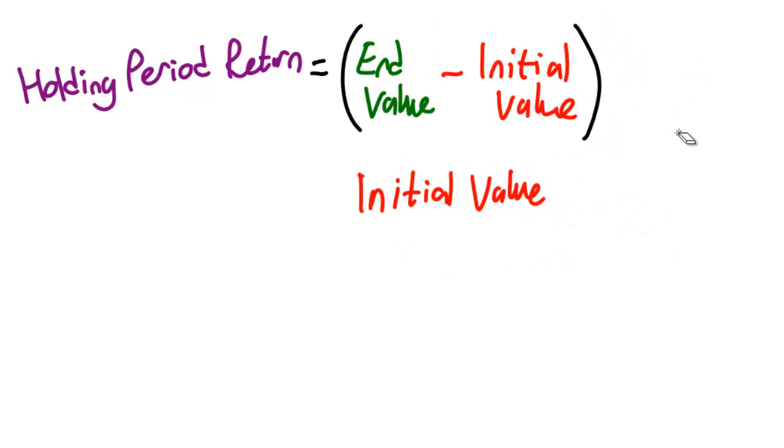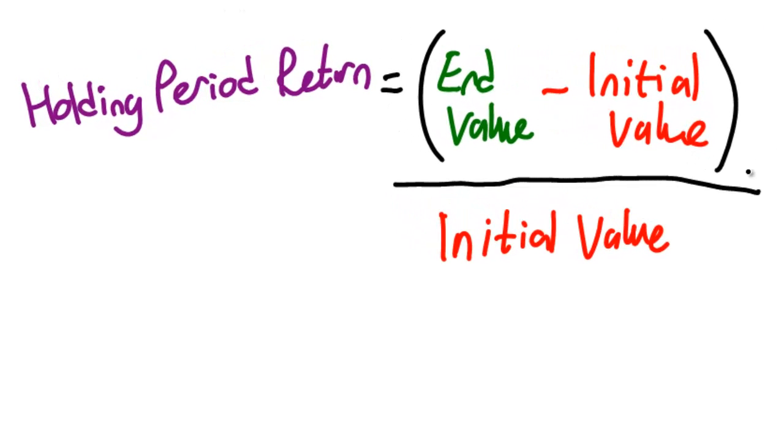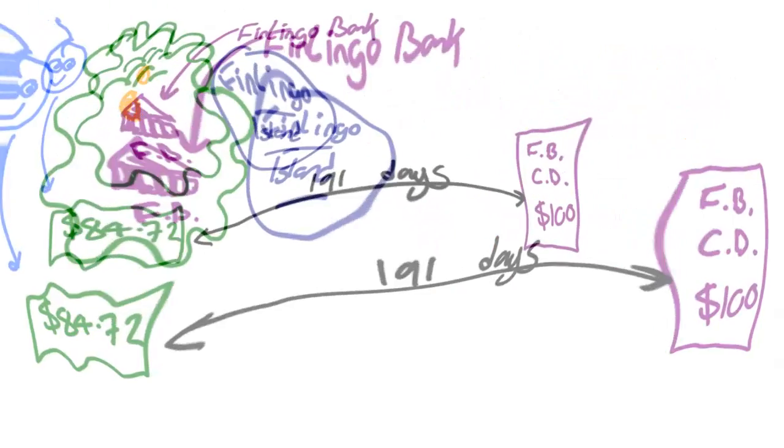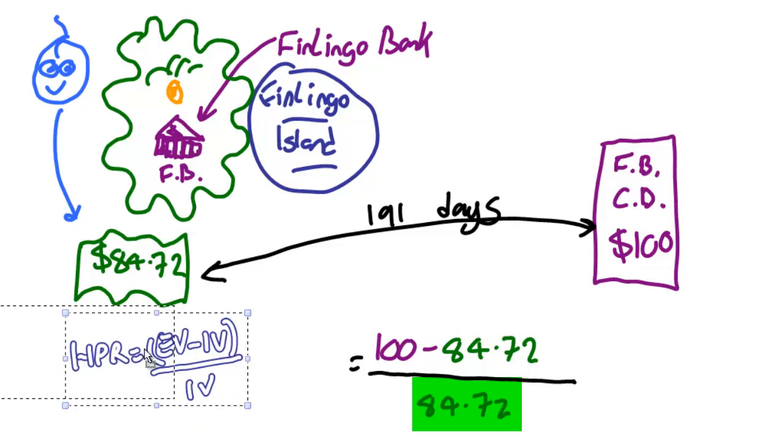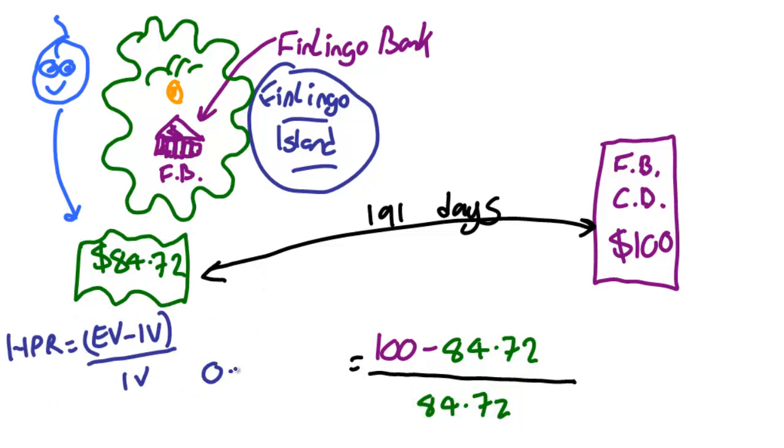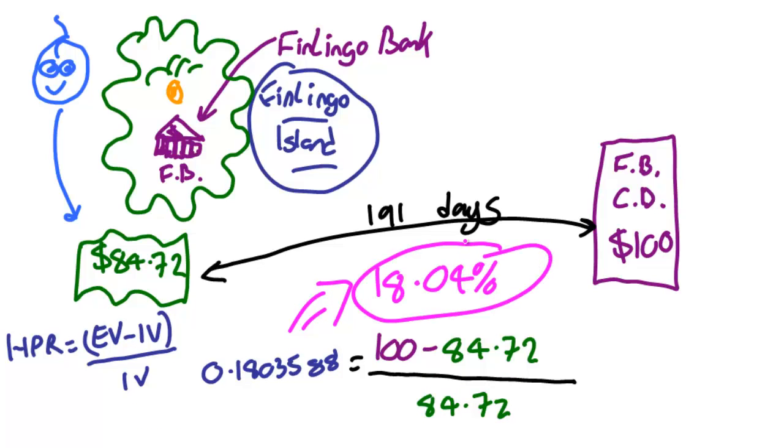So with the Money Market Yield, we can usually ignore the income term in the holding period return. So that makes our HPR 100 minus 84.72. This is then divided by 84.72, and that gives us 0.1803588, or approximately 18.04%.